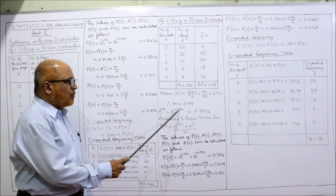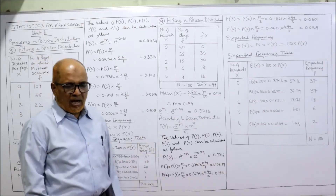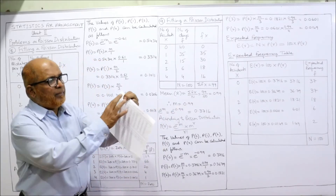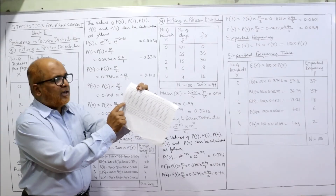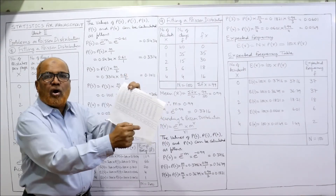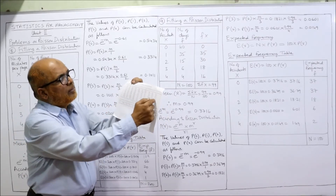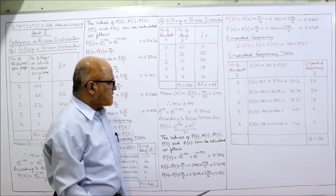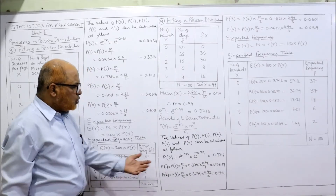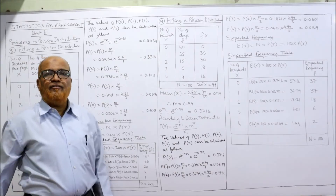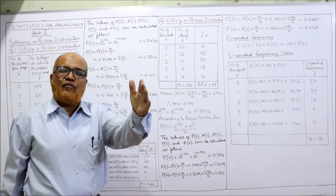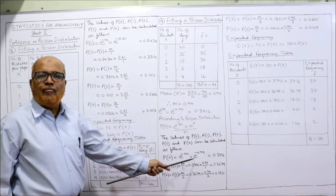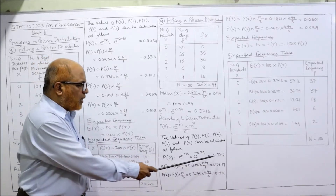Now e to the power of minus M — that is e to the power of minus 0.99. Refer to the large table since M is a fraction. In row 0.9 under column 9, you will find 0.3716. So e to the power of minus 0.99 equals 0.3716. Using the shortcut method, P(0) equals e to the power of minus M, which is 0.3716.